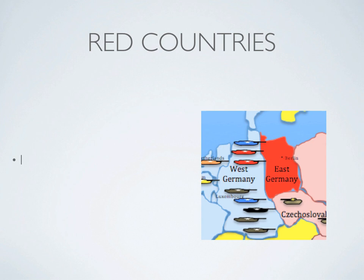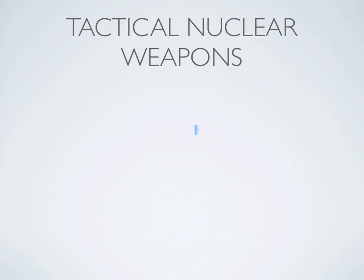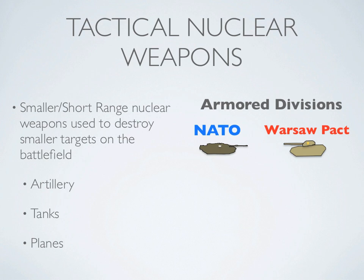When a country is turned red on the map, it means it has been contaminated with lethal radiation and cannot be moved through. This can happen with all types of nuclear weapons, including tactical. Tactical nuclear weapons are used primarily on the battlefield for smaller targets like destroying whole armored divisions, and can be fired from artillery, small planes, and tanks.